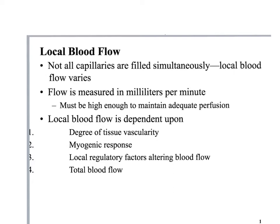We left off talking about blood flow and how blood flows through the vessels. Blood flow through arteries is away from the heart, and blood flow through the veins is towards the heart. What's different about the structure of veins that assists in the flow of blood? They have valves that prevent backflow. So flow goes: arteries to arterioles to capillaries to venules and veins.